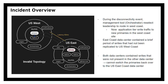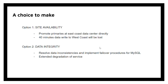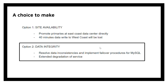Both data centers now contained writes not present in the other, so they could not simply switch the primary back to US East Coast. Here is the invalid topology. The company had a choice: option one was to maintain site availability by promoting the East Coast primary directly, but with 40 minutes of data written to West Coast, those writes would be lost. Alternatively, they could maintain data integrity by resolving inconsistencies and implementing MySQL failover procedures, but this would cause extended service degradation. GitHub explicitly chose to maintain data integrity while jeopardizing site availability.